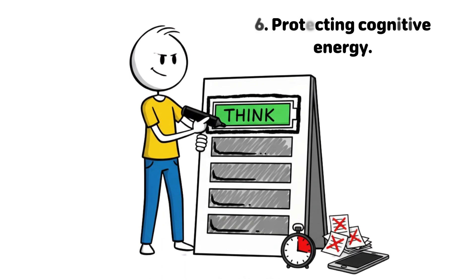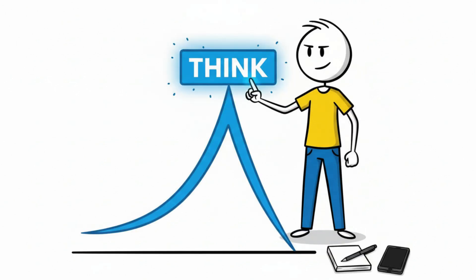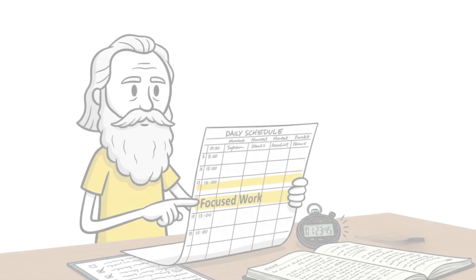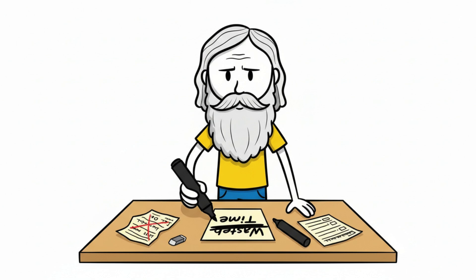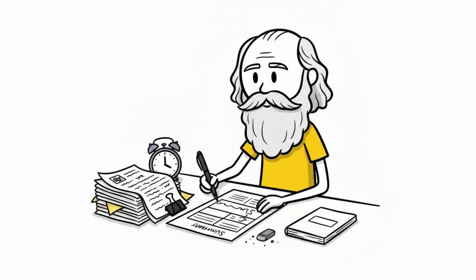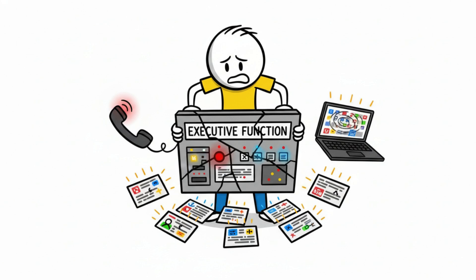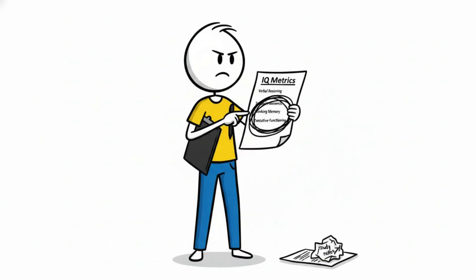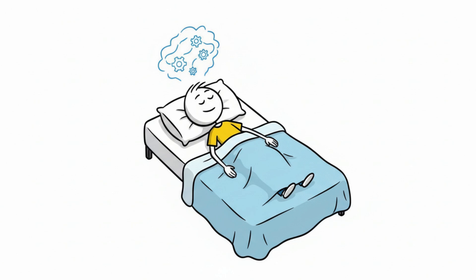Protecting Cognitive Energy. Smart people don't try to think all day. They think when their brain is strongest. Charles Darwin worked only four to five focused hours per day. The rest wasn't wasted. It was walking, resting, reflecting, allowing the mind to recover and integrate. This matters because chronic stress, sleep deprivation and constant stimulation damage executive function. One of the core components underlying what people measure as IQ. Your brain doesn't upgrade during constant hustle. It upgrades during recovery.